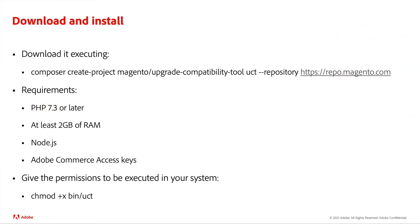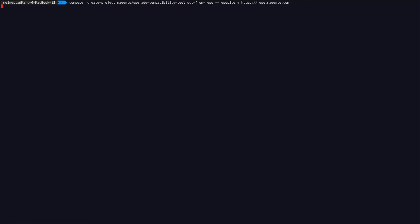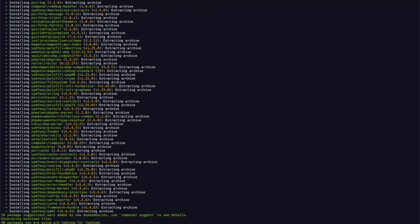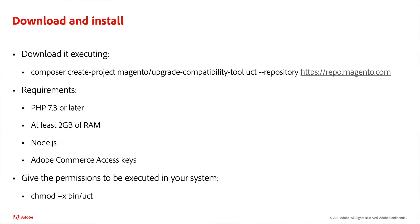In order to download the tool, you will need to run the Composer Create Project command, since it is distributed as a Composer package with every release of an Adobe Commerce version. Execute the Composer Create Project command on your terminal. Remember that it requires PHP 7.3 or later, at least 2GB of RAM, Node.js and Adobe Commerce access keys. When the tool is already installed, let's make sure that it has the right permissions to be executed in your system.